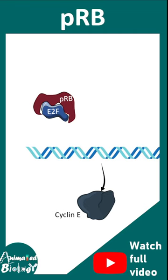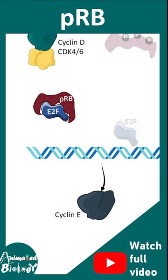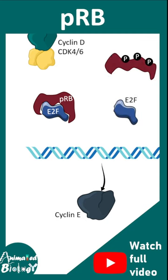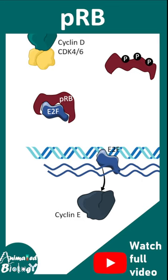When growth factor is present, cyclin D and CDK4 phosphorylate PRB, which releases E2F, and thereby cyclin E is produced and the progression of the cell cycle can happen.